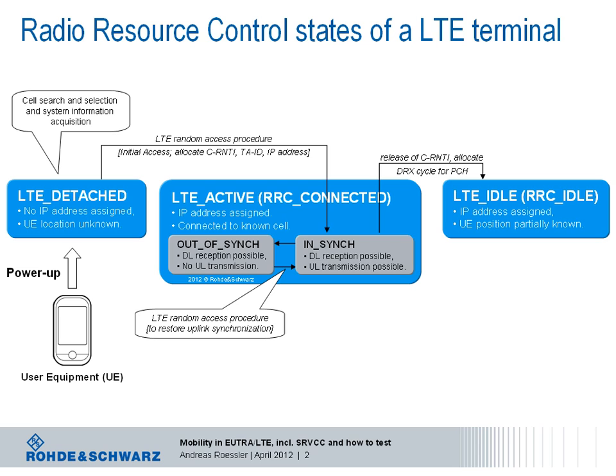In DRX mode, only the paging channel in the downlink is monitored following a defined period. This is also defined as RRC idle state. To move into an active state again, the terminal will use the random access procedure. The DRX cycle is quite flexible and configurable by the network. A short and a long DRX cycle is possible. The DRX cycle is given in numbers of subframes, where for the long DRX cycle, the maximum is 2560 subframes.